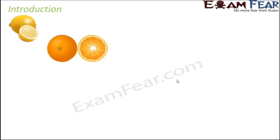There are things we come across very frequently but never knew they contain some acid or base. One such thing is lemon and citrus fruits — lemons, limes, and oranges are all called citrus fruits. Do you know why? Because they contain an acid called citric acid, and due to the presence of citric acid they have been given the name citrus fruits.